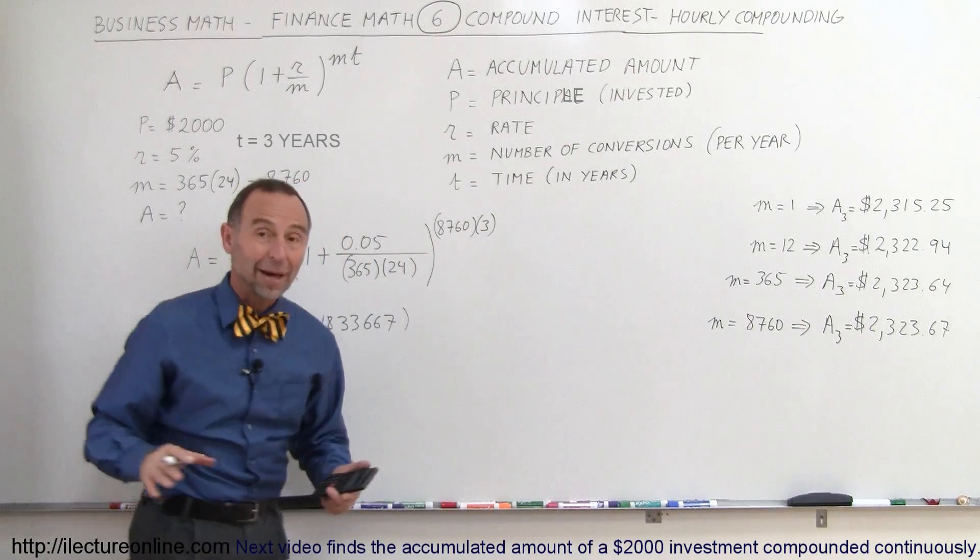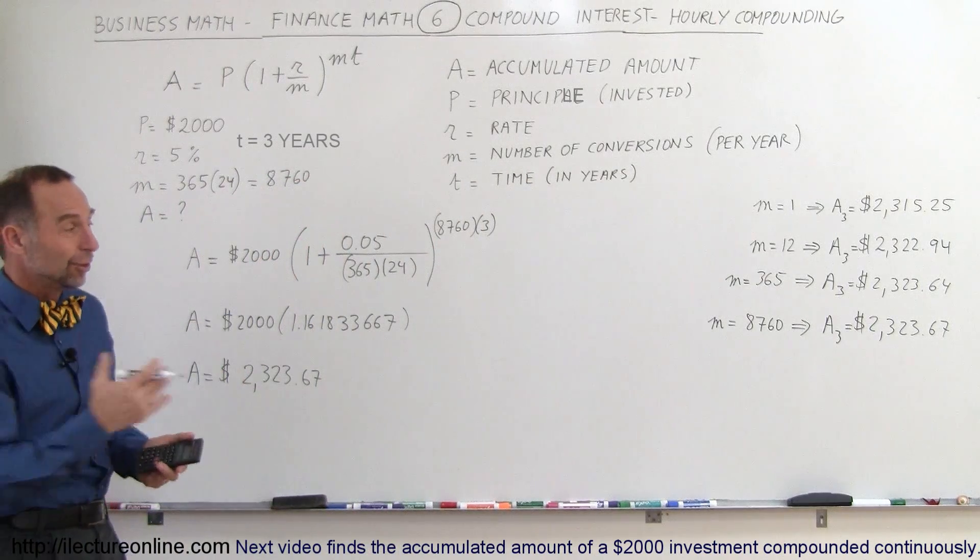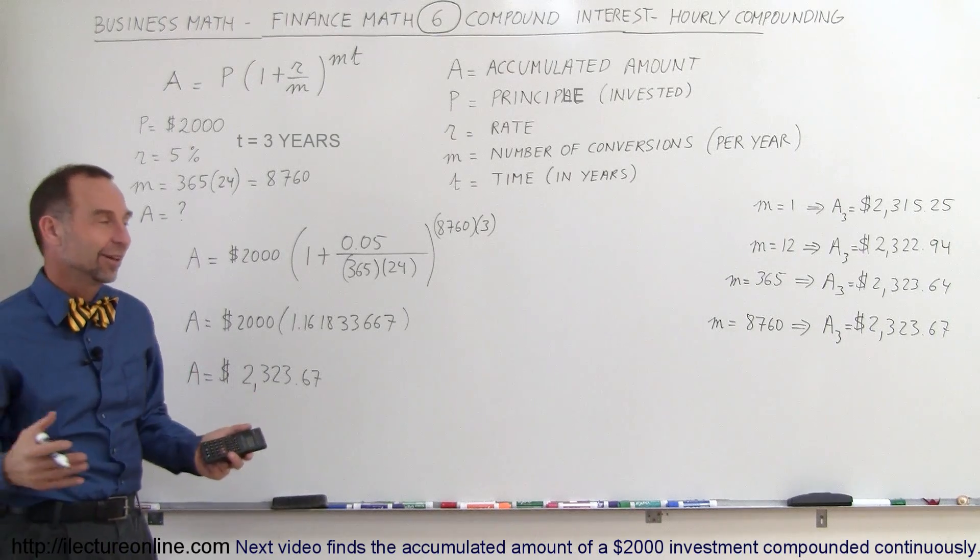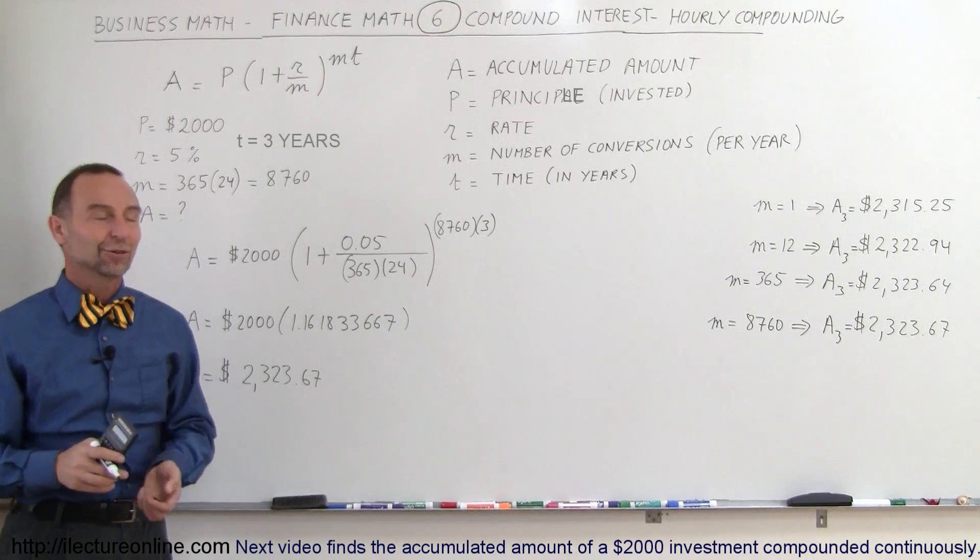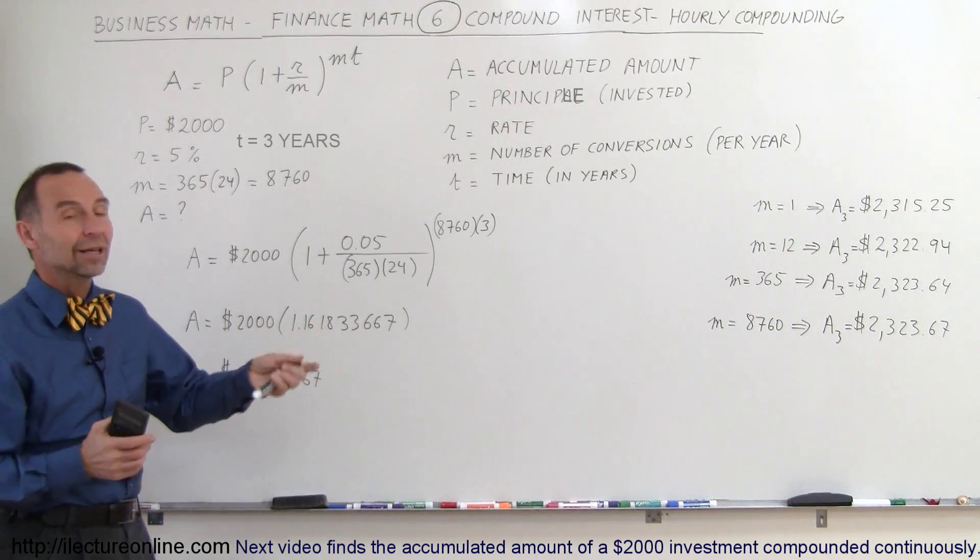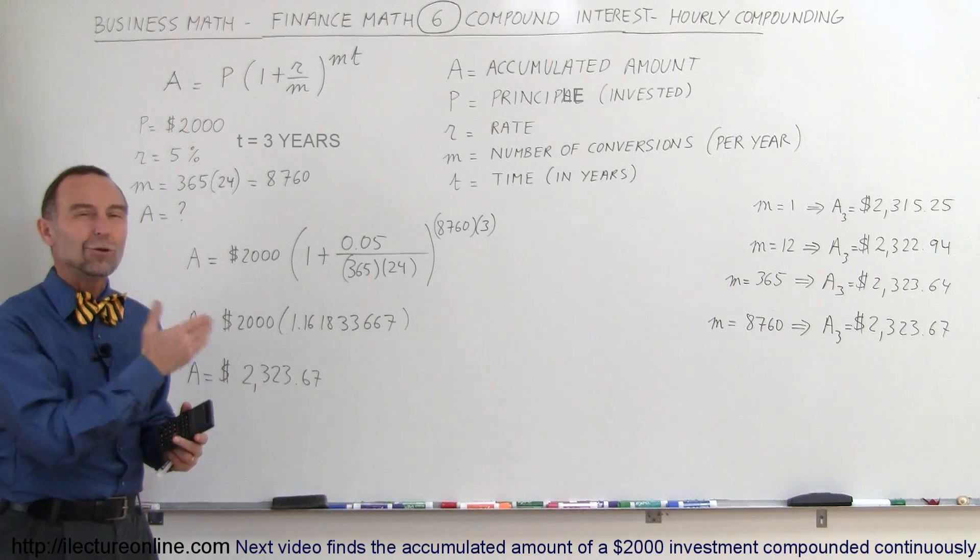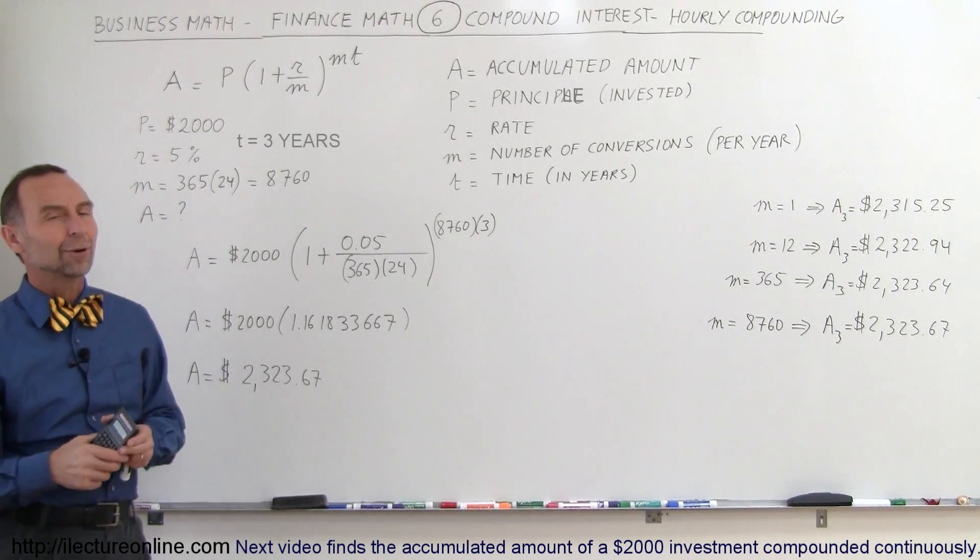The difference between compounding daily and compounding every hour is only 3 cents on a $2,000 investment over 3 years. Hardly worth the effort. You can see why banks do not even bother compounding hourly. There's no benefit to be gained, maybe a gimmick, but really no value in doing so.